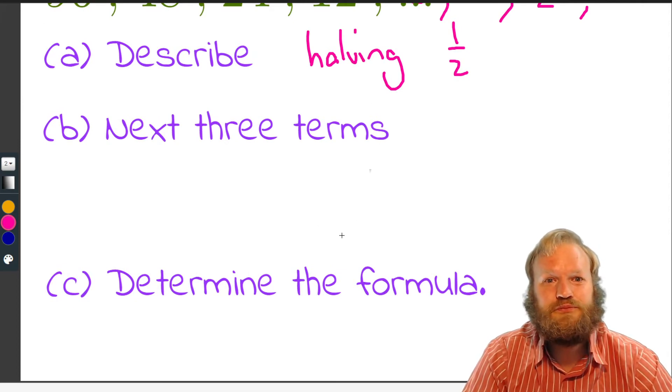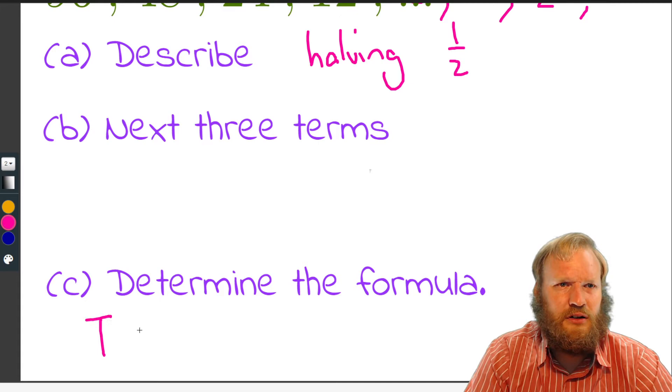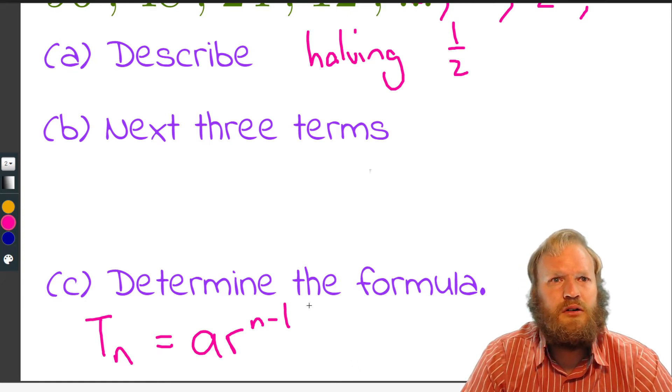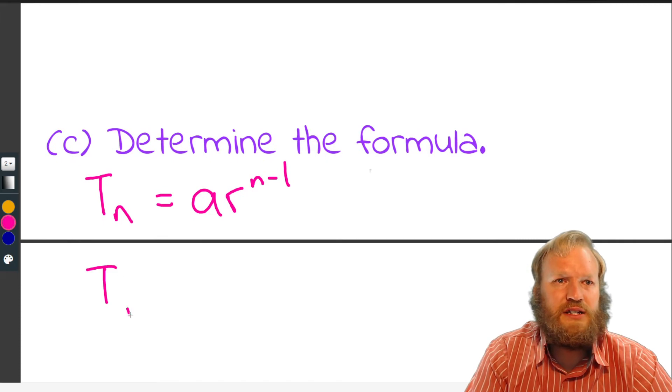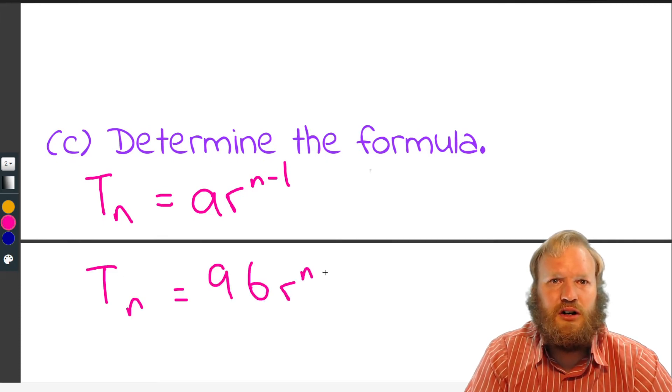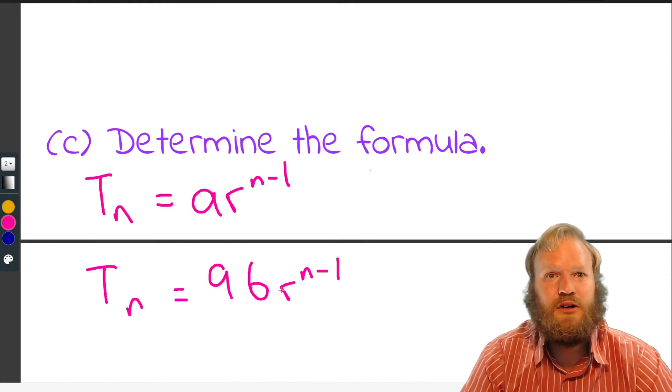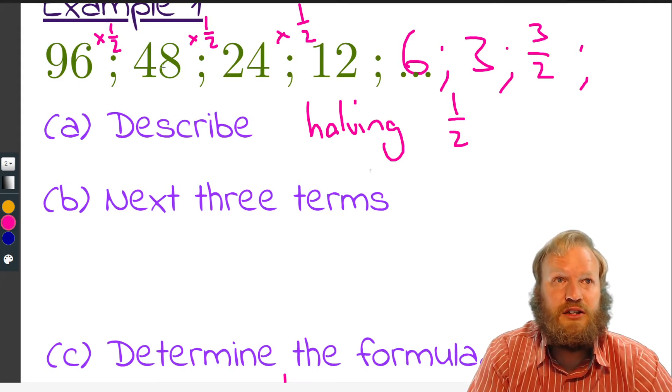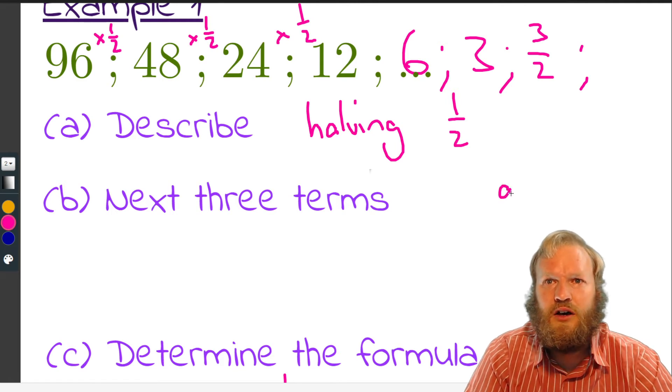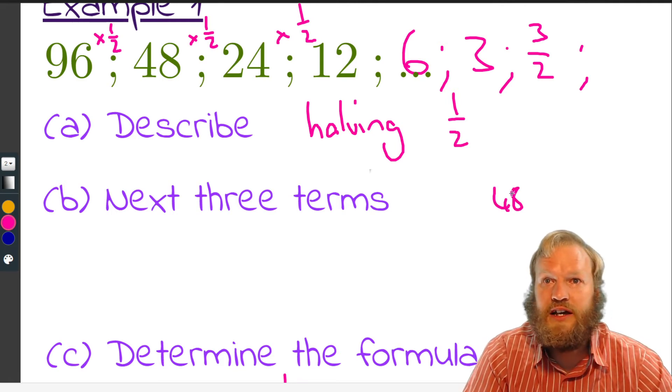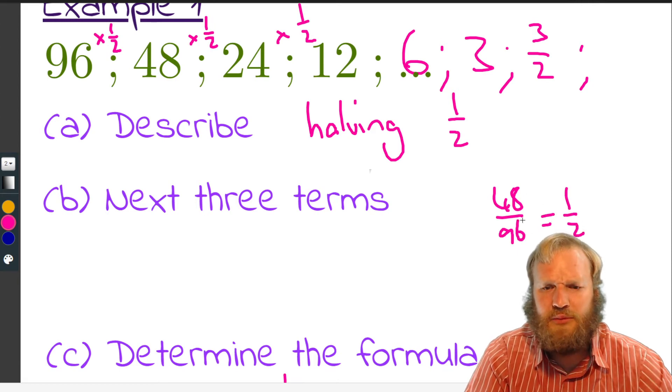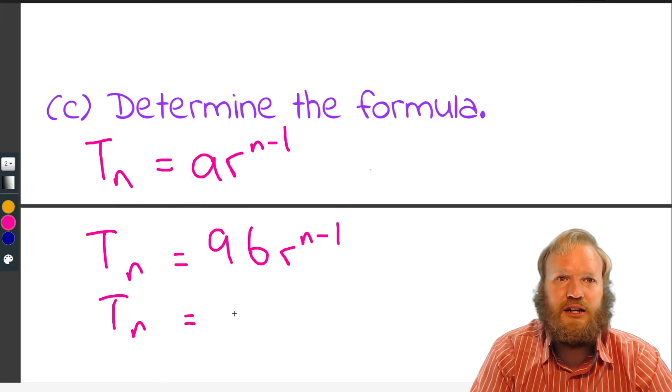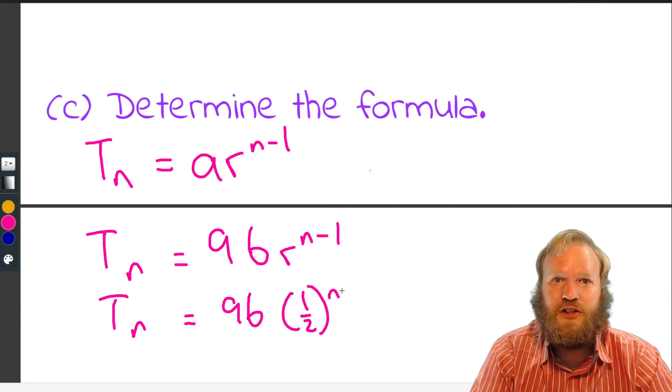Determine the formula. Okay, so our formula is TN equals AR to the N minus one. Well, we know what A is. There it is, 96. So we know that TN equals 96 times R to the N minus one. R, we said, was the ratio. What are we multiplying by? So we could either look at it as T2 over T1, T3 over T2. So we could say, well, it was 48 over 96. That's where we got our half from, because it's halving all the time. So we've got R must be a half from that.